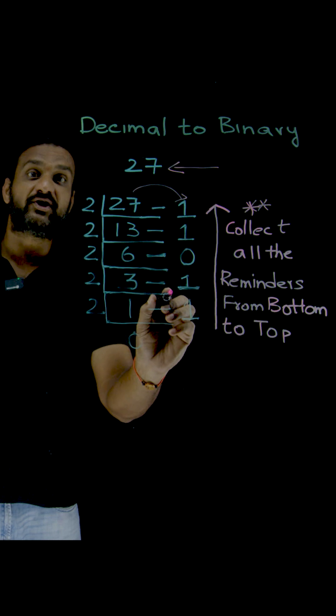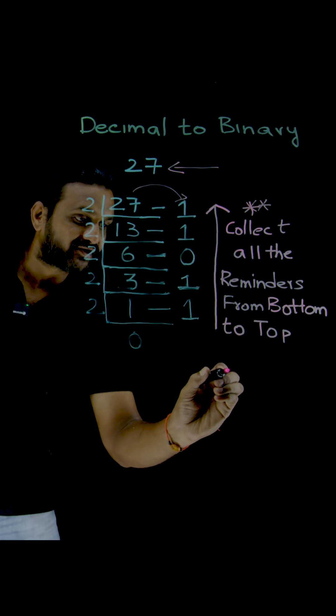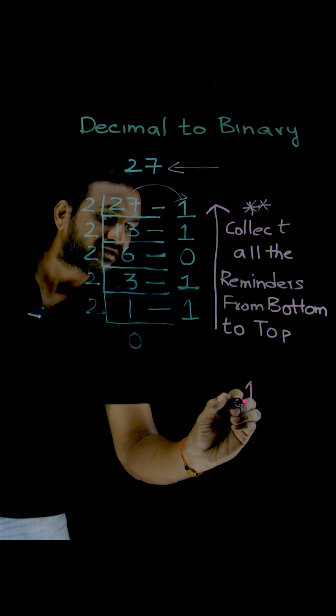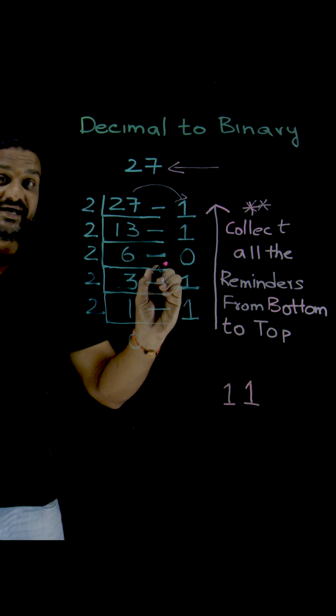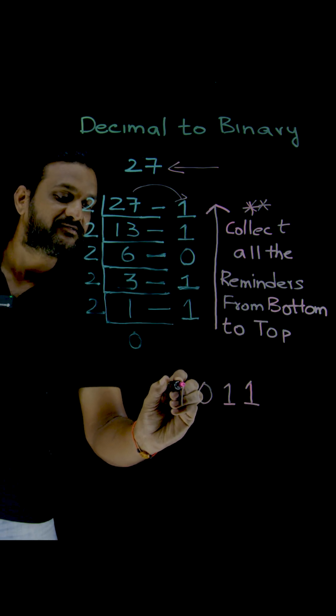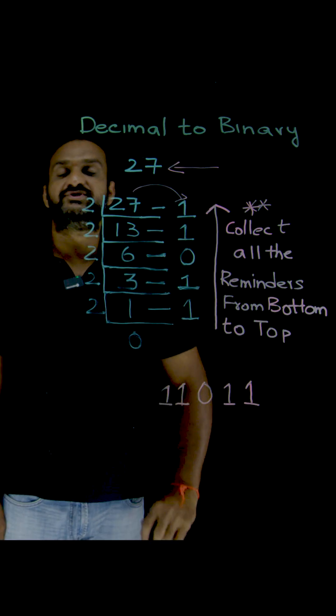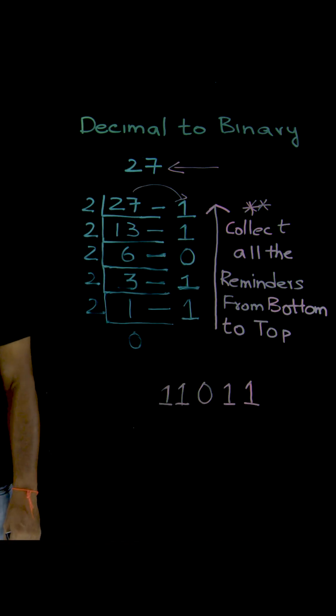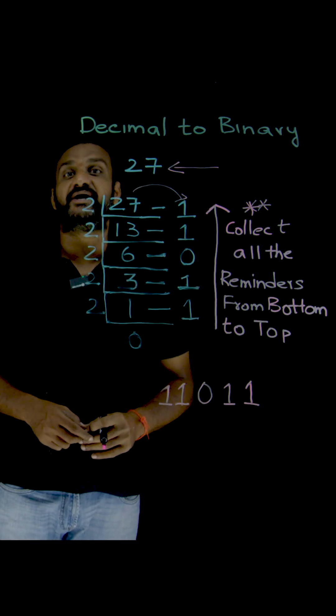Now what we have to do is collect all these values from bottom to top and write them from right to left. So the final binary value of the given decimal number is 11011. This is how a decimal number can be converted into a binary number.